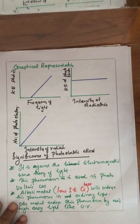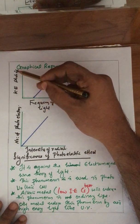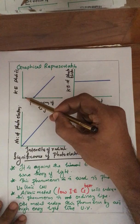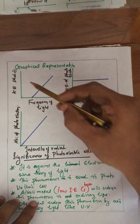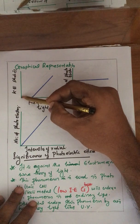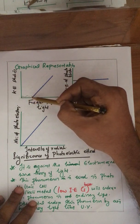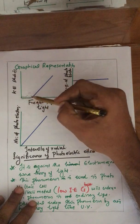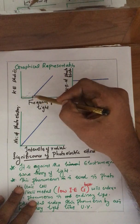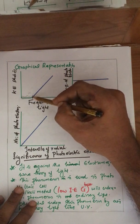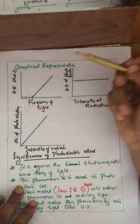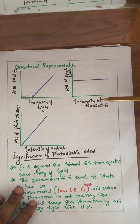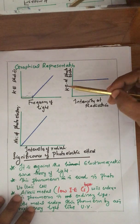Now look at the graphical representation. Plotting kinetic energy of photoelectrons against frequency of light — the graph does not start from the origin. The photoelectric effect takes place only if the light has a certain frequency, that is ν₀ — the threshold frequency. Up to this point there is no photoelectric effect; after the frequency increases beyond ν₀, the photoelectric effect occurs and kinetic energy of photoelectrons increases. Plotting kinetic energy of photoelectrons against intensity of radiation gives a straight horizontal line — intensity is independent of kinetic energy of the photoelectron. Plotting number of photoelectrons against intensity of radiation gives a straight line — as intensity increases, number of photoelectrons also increases.